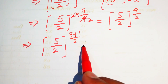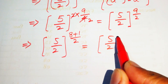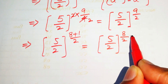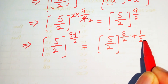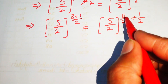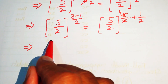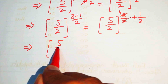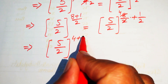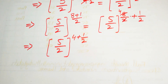We break this fraction and write it as 5 over 2 with exponent 8 over 2 plus 1 over 2. Since 8 over 2 is 4, we obtain 5 over 2 with exponent 4 plus 1 over 2.